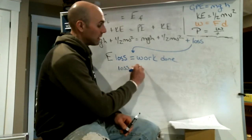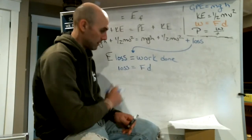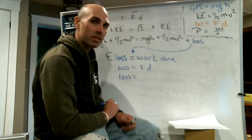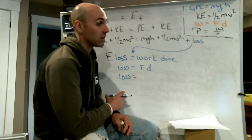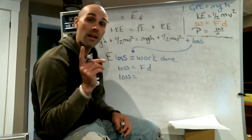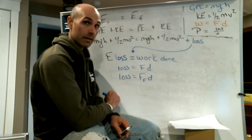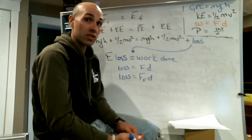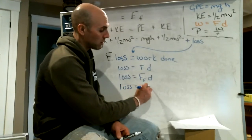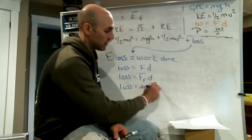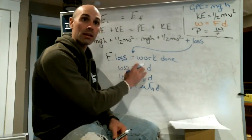Work is equal to force times displacement. The force in this case is the force of friction, so work equals force of friction times displacement. From our equations list, force of friction equals mu times the normal force, Fn. So we replace that: work equals mu times Fn times displacement.